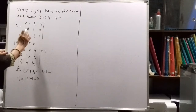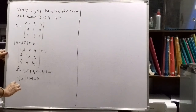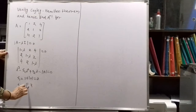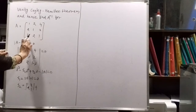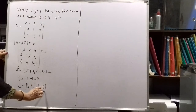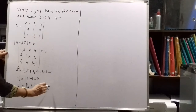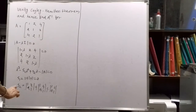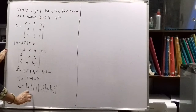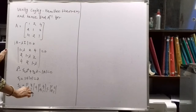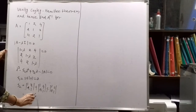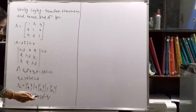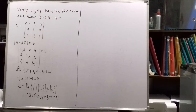Then we have to find S2. S2 is the sum of the minors of the diagonal elements. The minor of the first diagonal element gives determinant [[1,2],[2,1]] = 1 - 4 = -3. Similarly, the other minors also give -3 each. So S2 = -3 + (-3) + (-3) + ... which gives -15 - 6 = -21.